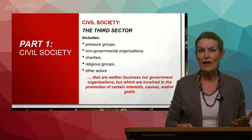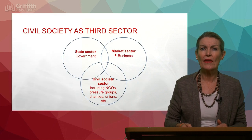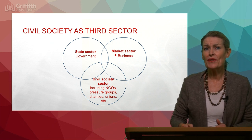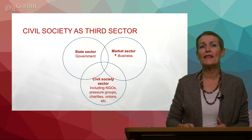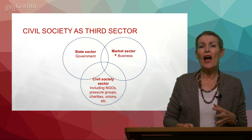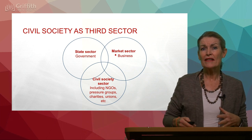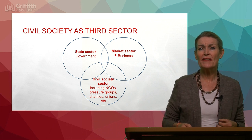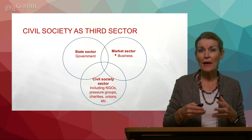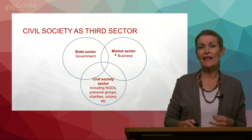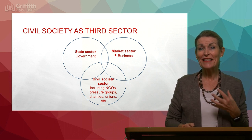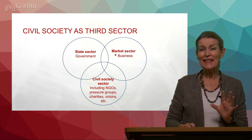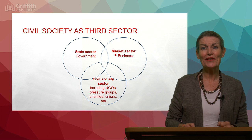For example, you've got Greenpeace and Oxfam. Civil society is the third sector, and a Venn diagram shows civil society at the bottom, with the market sector — your businesses — and the state sector — government. They all intermingle and impact and influence each other, which is what we're going to touch on during this topic.